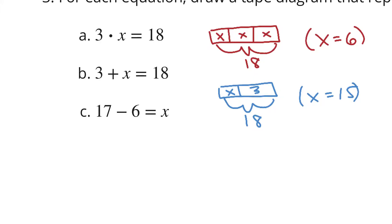Then, 17 minus 6 equals X. A little more challenging, right? But essentially, if I have an X and I have a 6, that's going to add up to be 17. X equals 11 here. 17 minus 6 is equal to 11. So that worked.